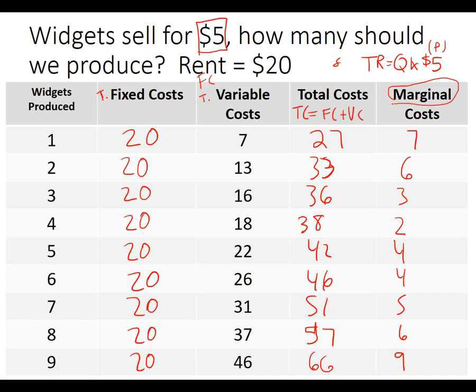Widgets sell for $5 and I want to profit maximize. The first widget costs me $7 to make — I'm going to produce it even though I lose $2, because I can see profits further down the table. Like many businesses, the first couple of years they don't make a profit. The second widget costs me $6; I'll sell it for $5 — I lose $1, but I'm going to do it. The third widget only costs me $3 — now I'm getting into cheaper production — I sell it for $5, that's a plus $2 profit.